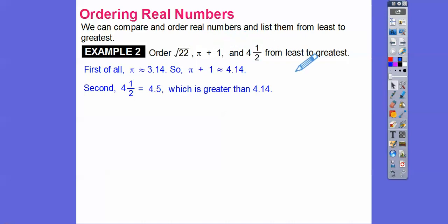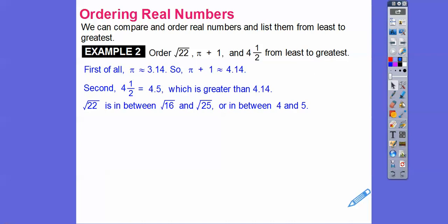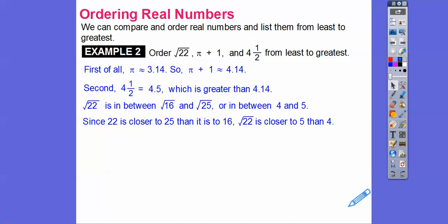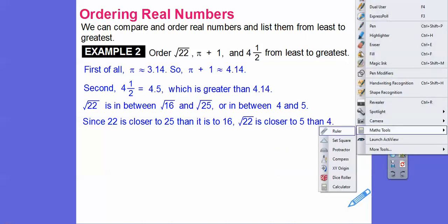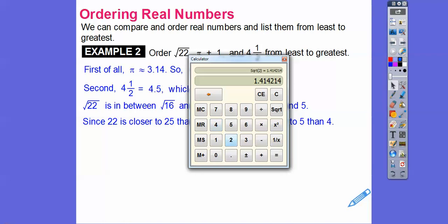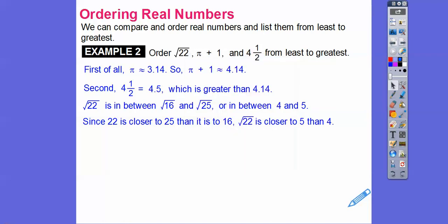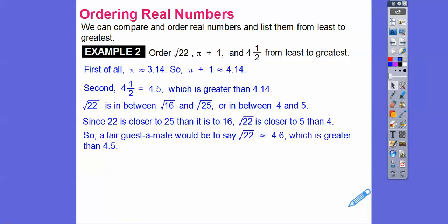The square root of 22 is in between the square root of 16 and the square root of 25. Since 22 is closer to 25 than to 16, it's going to be closer to 5 than to 4. So I'd guesstimate about 4.6 or 4.7 — the calculator confirms it's about 4.69. So √22 ≈ 4.6 is bigger than 4.5. So from least to greatest: π + 1 (≈ 4.14), then 4.5, then √22 (≈ 4.69).